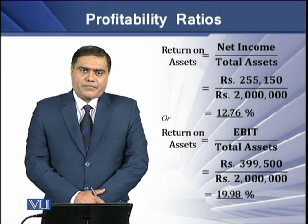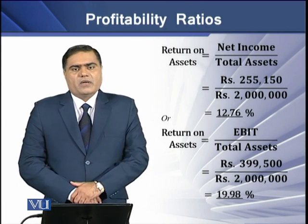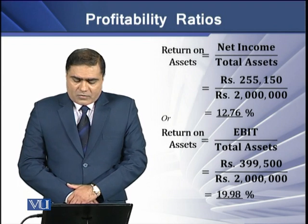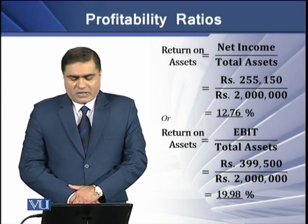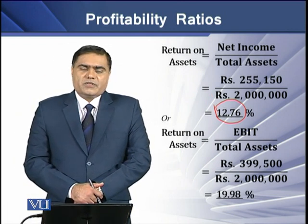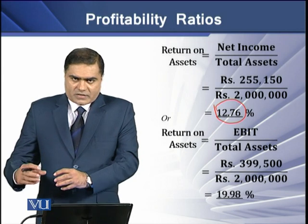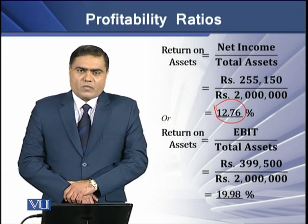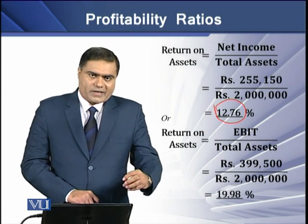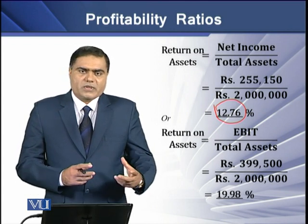We have Return on Assets. یہ ratio ہمیں یہ بتاتی ہے کہ firm نے اپنے assets میں لگے ہوئے پیسے کے کتنے فیصد کے برابر after tax profit جنریٹ کیا ہے. اس کا فارمولا ہے net income over net assets. We have net income of 255,150 and assets of 2 million. The resulting answer is 12.76%. The firm has generated an amount equal to 12.76% of investment in its assets as after-tax profit. اس کا مطلب یہ بھی ہوا کہ اگر 12.76% کی حساب سے firm ہر سال profit پیدا کرے تو تقریباً 8 سال کے اندر اندر فرم اپنے assets کی تمام investment کو recover کر لے گی.